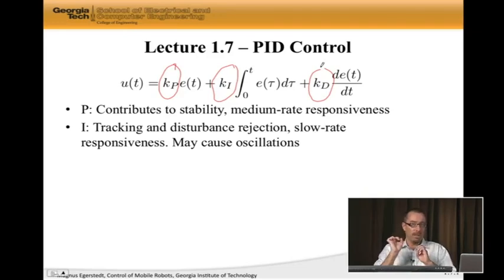There is a warning I need to make there. By making KI large, you may very well induce oscillations. So this is not picking all of them a million and going home. No, you have to be a little careful in how you actually select these gains.